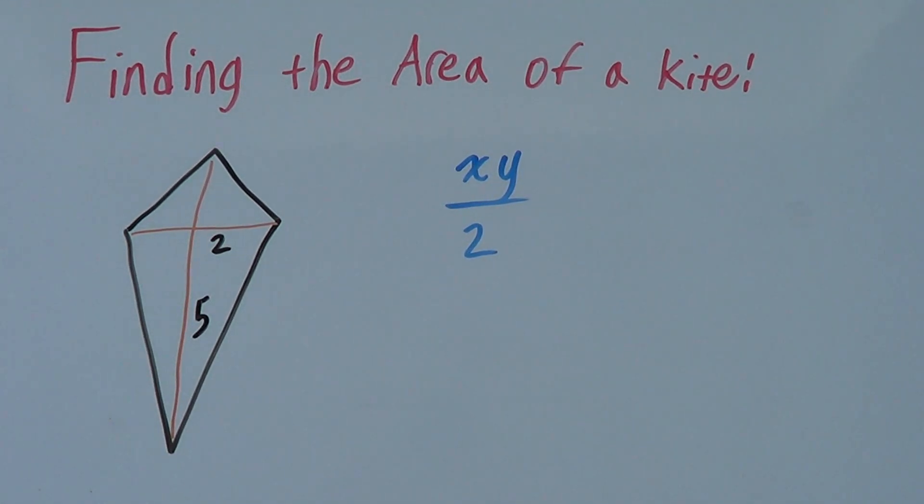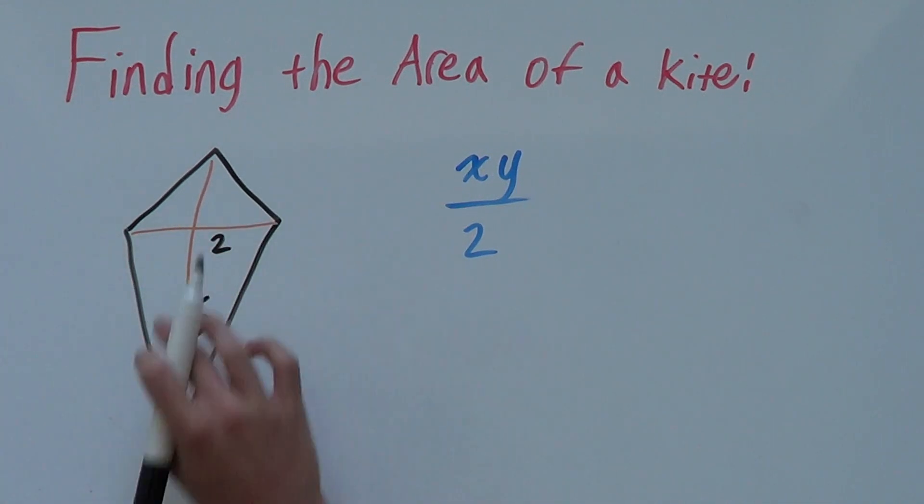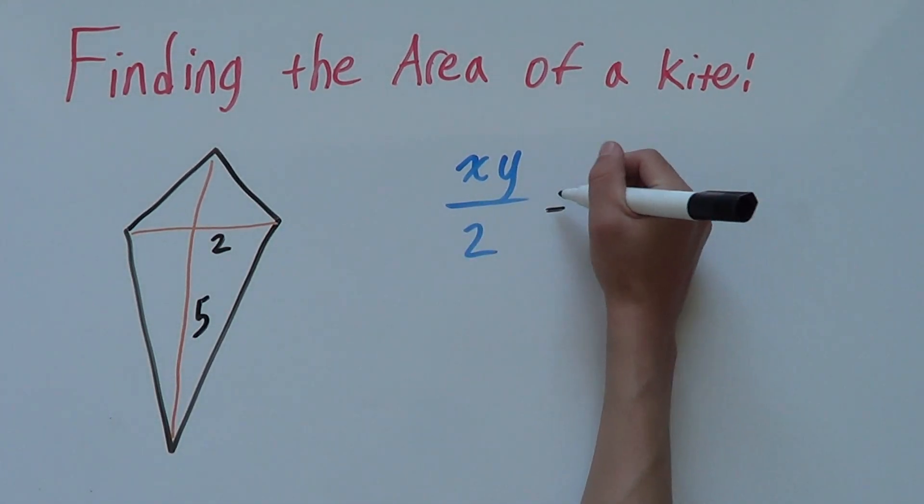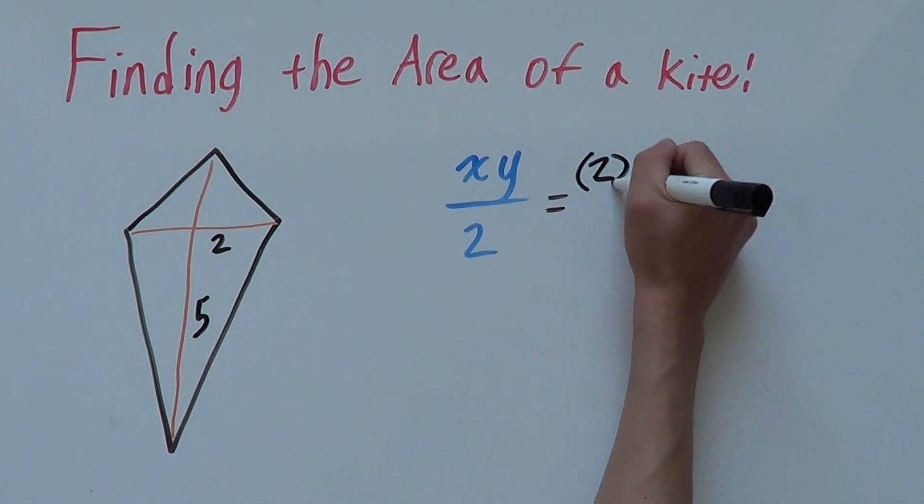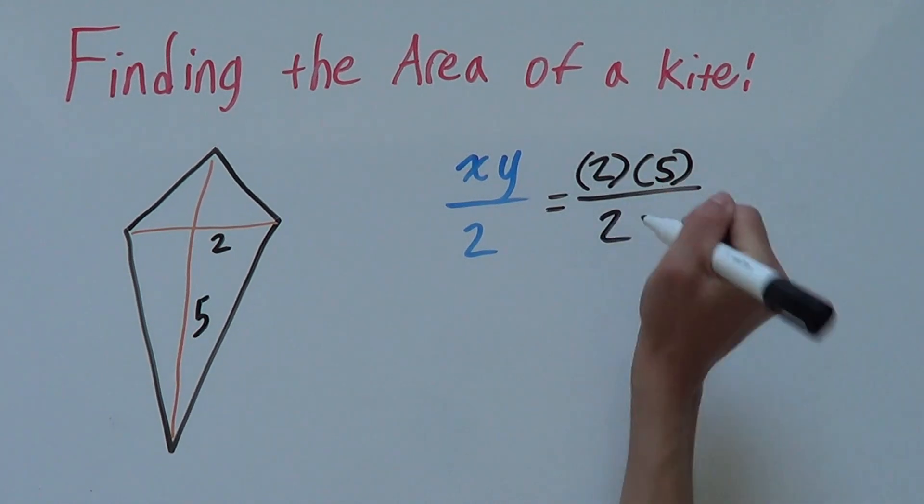We'll work out this example. If we have 2 and 5, we substitute our values in. So, we have 2 and 5 over 2.